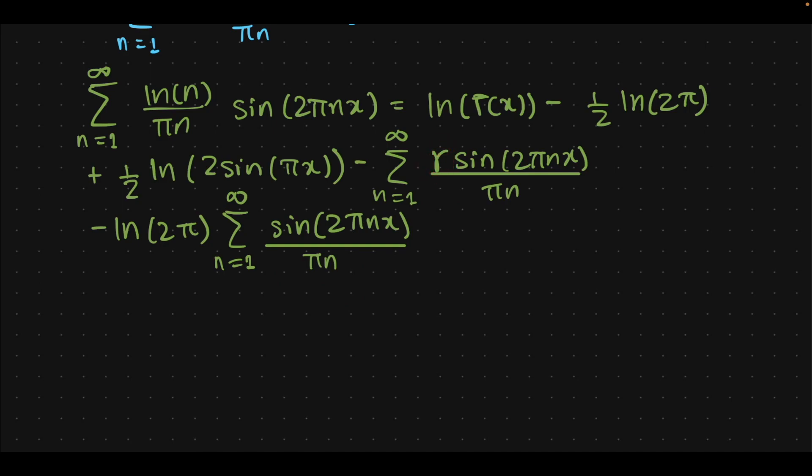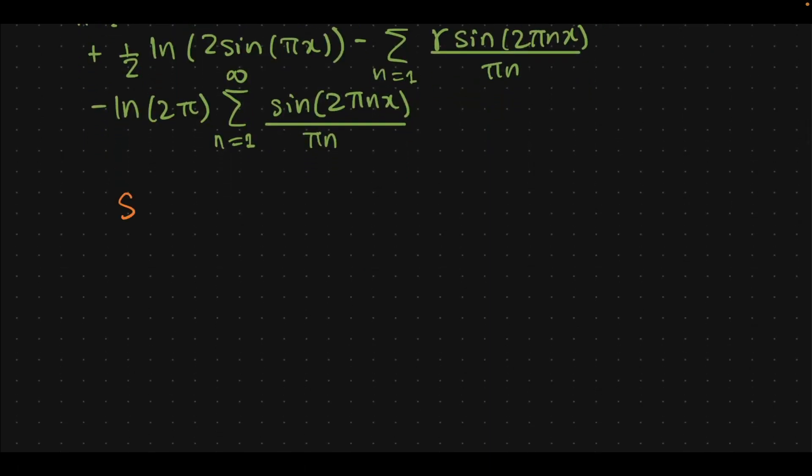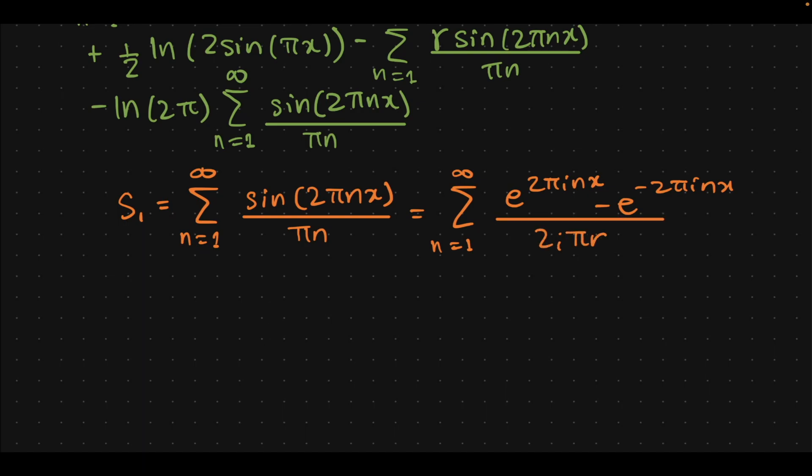So in order to simplify that, we need to consider S₁, which is basically that, and then once we simplify we can just plug in into our expression. Sine 2πnx over πn equals, to simplify, we can decompose this sine into its exponential terms using Euler's identity: e^(2πinx) minus e^(-2πinx) over 2iπn.